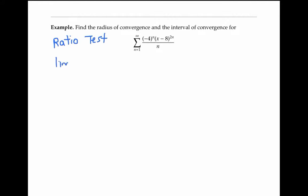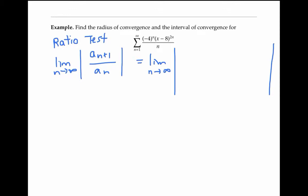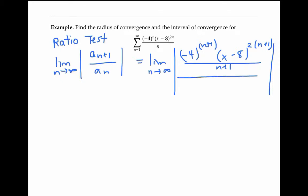We need to find the limit as n goes to infinity of the absolute value of a sub n plus one over a sub n, where the a sub n's are the terms. For this power series, we compute a sub n plus one by plugging in n plus one everywhere we see an n. So that's negative four to the n plus one times x minus eight to the two times quantity n plus one, divided by n plus one. We divide all that by the a sub n term, which is negative four to the n times x minus eight to the two n over n.